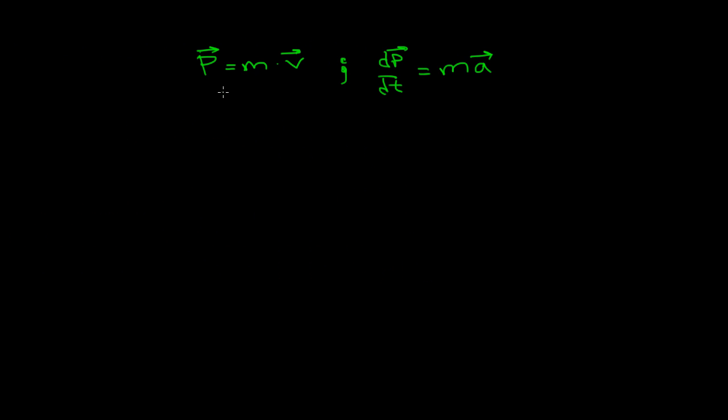Alright, so we learned about momentum and we found that when we take the derivative or find how it changes with time, we find that that's equal to mass times acceleration. That basically led to the conclusion that when dP/dt is not equal to zero, a change in motion occurred.